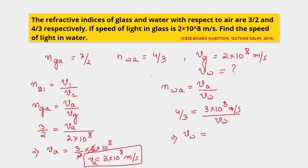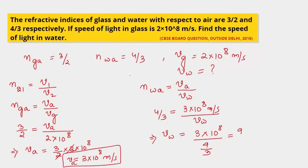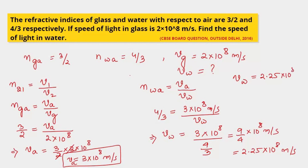Rewriting the equation: velocity of light in water = 3×10⁸ ÷ (4/3) = 9/4 × 10⁸ = 2.25×10⁸ m/s. So the velocity of light in water is 2.25×10⁸ m/s. The speed of light in water is 2.25×10⁸ m/s — this is the answer to our question.